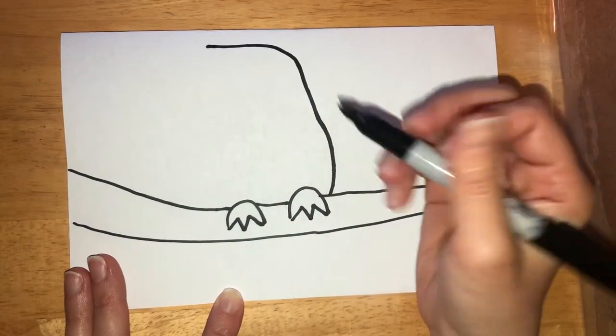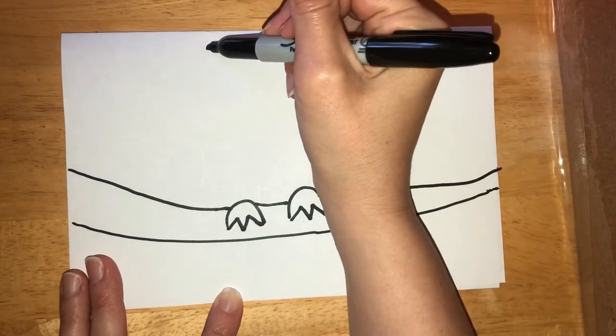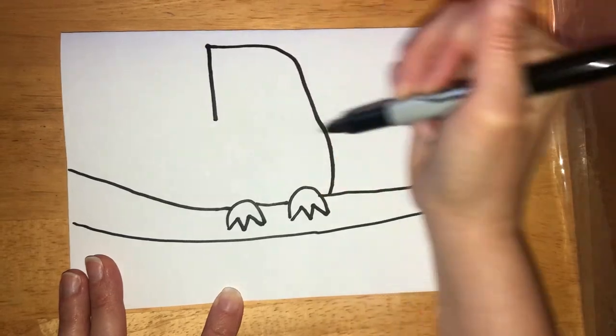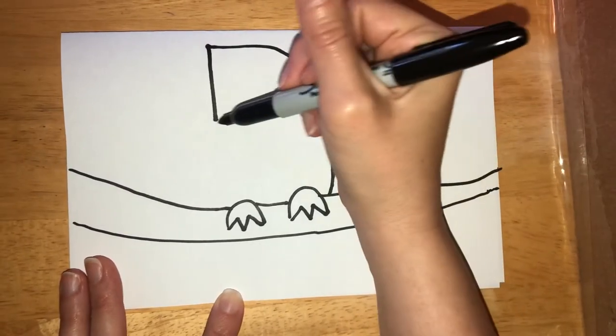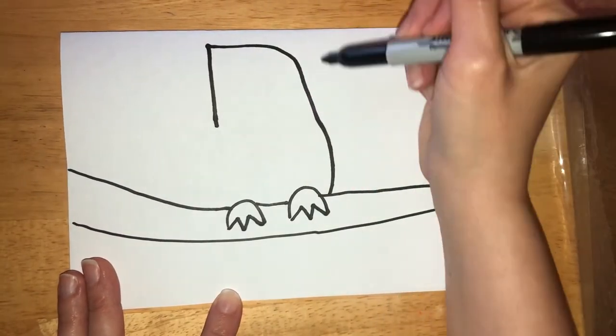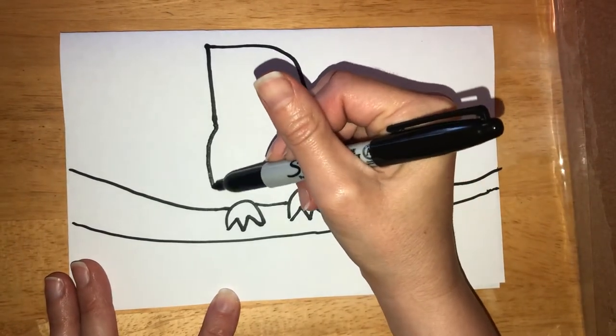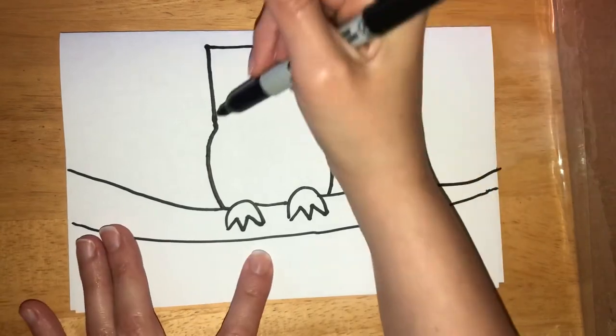So you're actually going to make a straight line down about to the middle of his body. He's got a really big beak, so about half the size. And then here you're going to make a curve outward—that's the other half of his body.